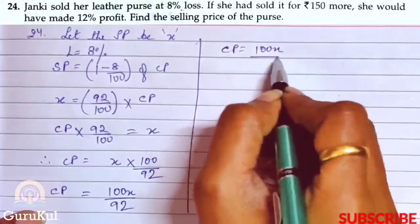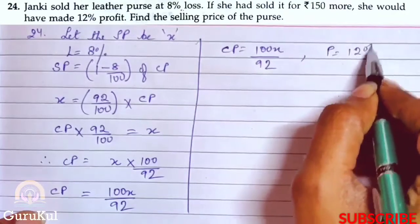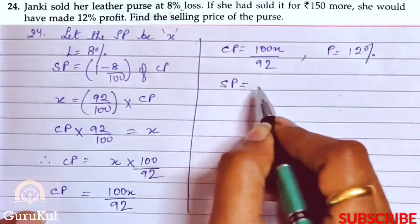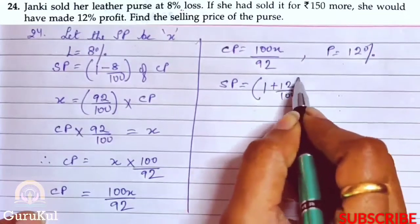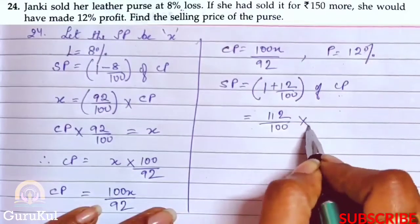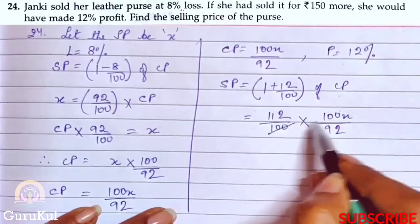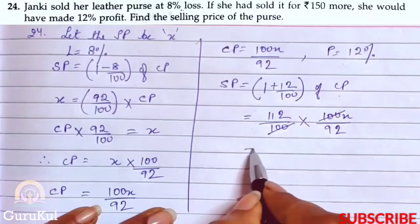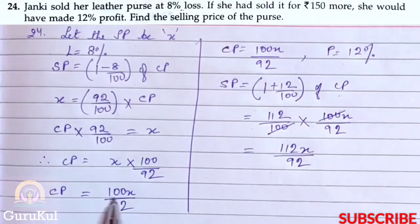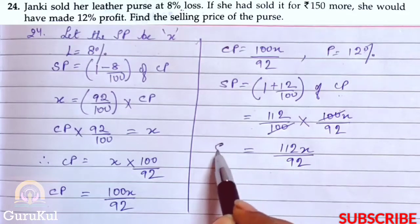Here she made a profit of 12%. So SP equals 1 plus 12 by 100 bracket closed of CP, which is 112 by 100 into 100x by 92. 100 and 100 cancel. What remains is 112x by 92. So 100x by 92 is the cost price and 112x by 92 is the selling price after 12% profit.